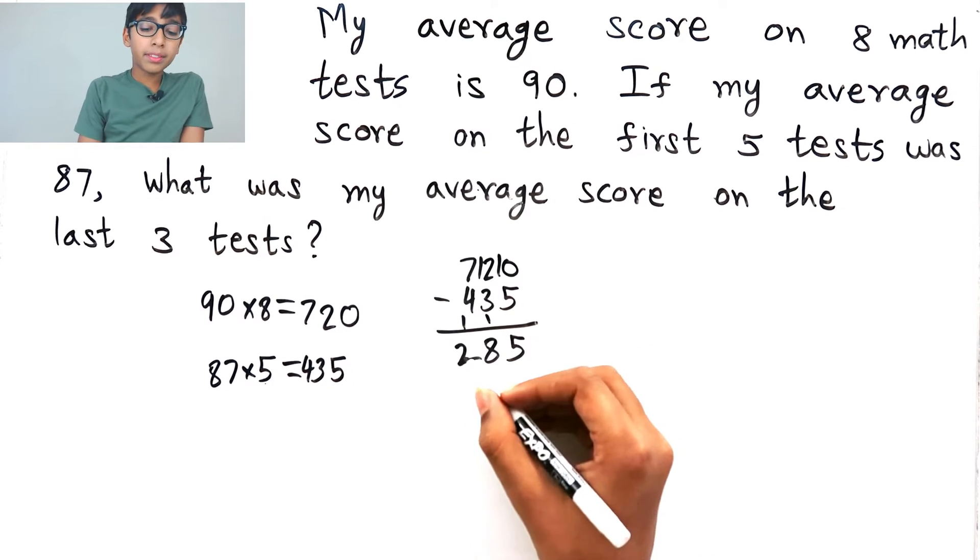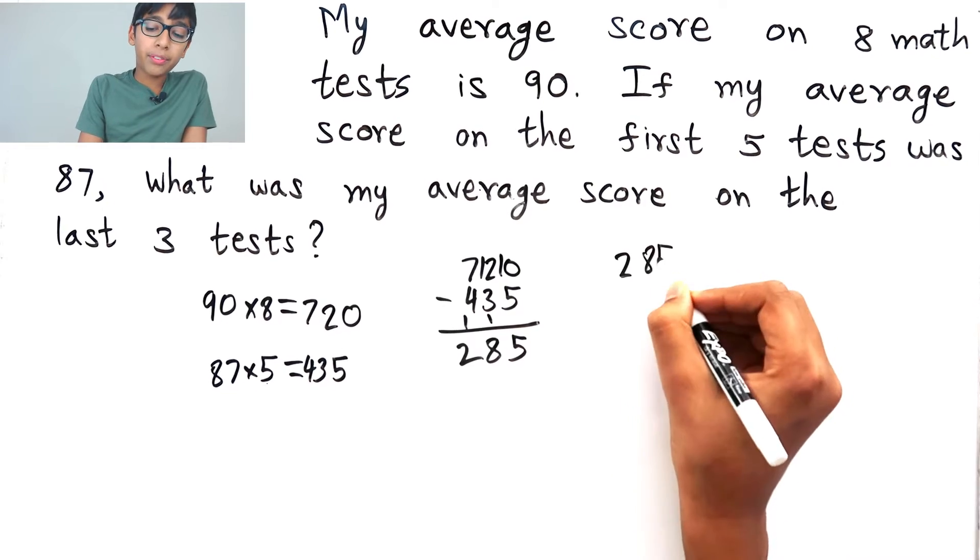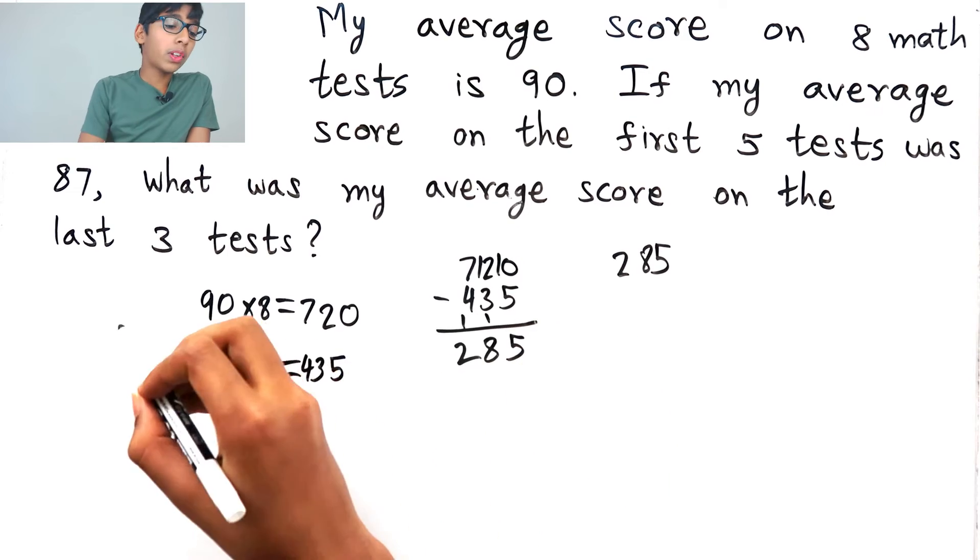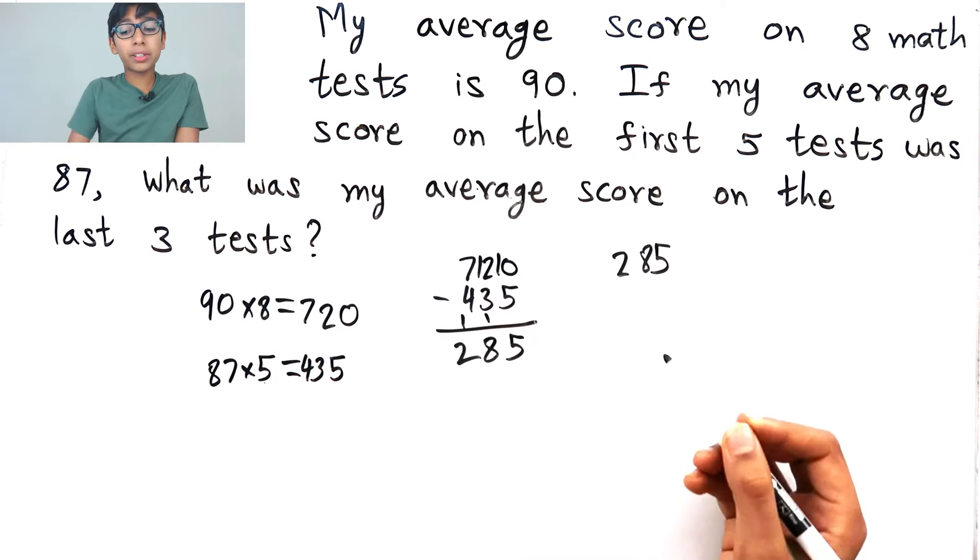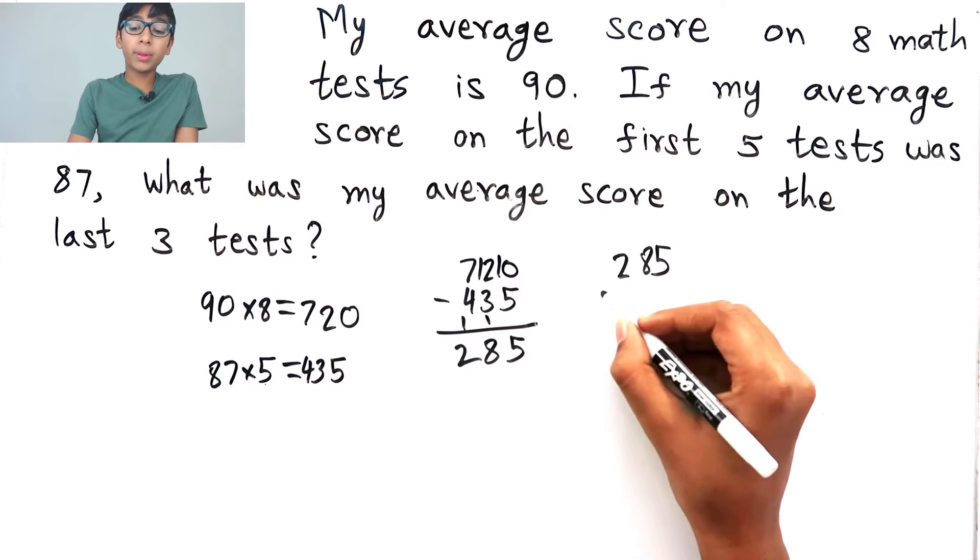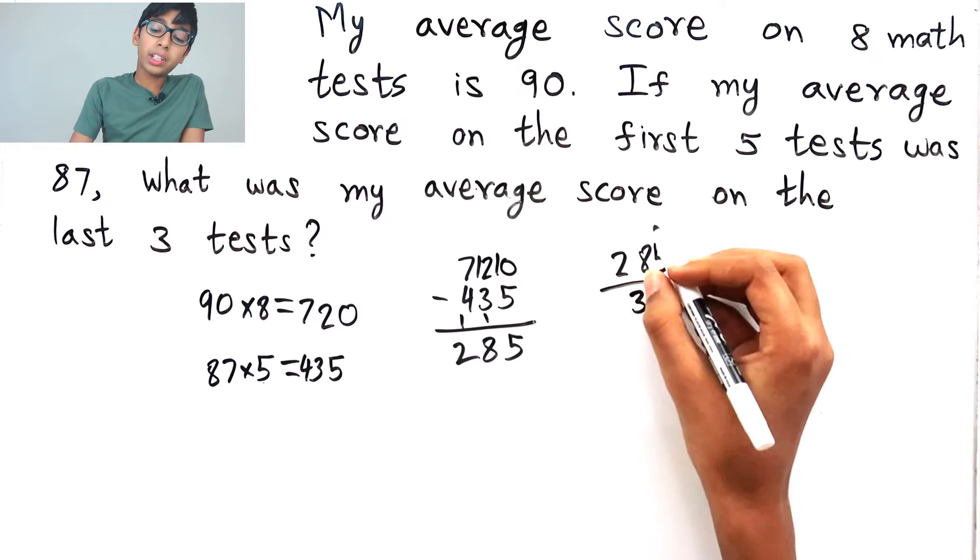Okay, so now, all I have to do is subtract 720 minus 435. We have 285. So now, what was my average score on the last 3 tests? So, we have to divide 285 by 3.